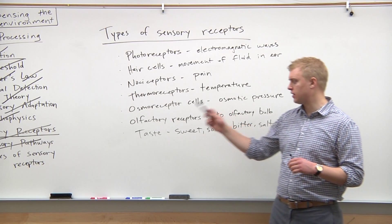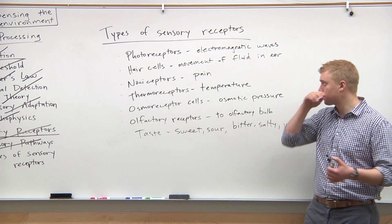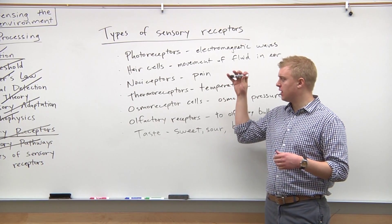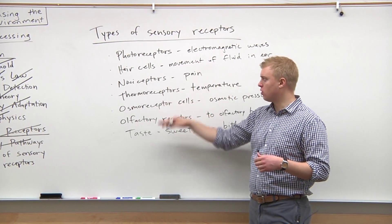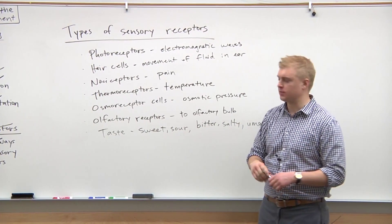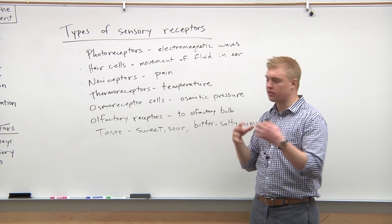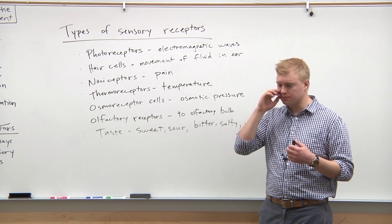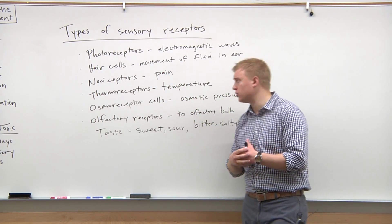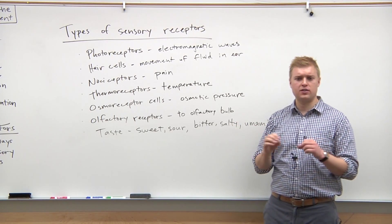Alright, so last topic of the night: we'll talk about the types of sensory receptors. The MCAT wants you to know the most high-yield ones and recognize their functions. Photoreceptors are obviously going to respond to electromagnetic waves in the visible spectrum.